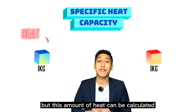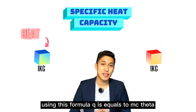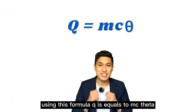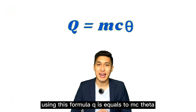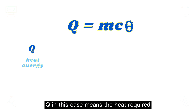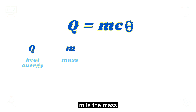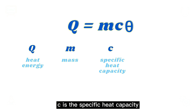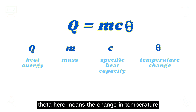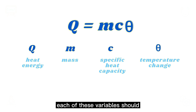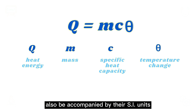But this amount of heat can be calculated using this formula: Q is equal to mc theta. Q in this case means the heat required. m is the mass. C is the specific heat capacity. Theta here means the change in temperature. Each of these variables should also be accompanied by their SI units.